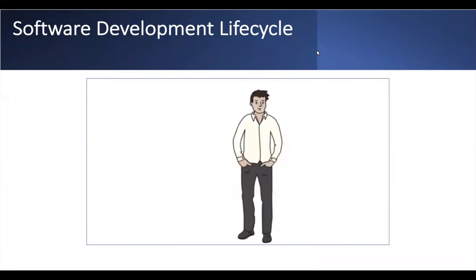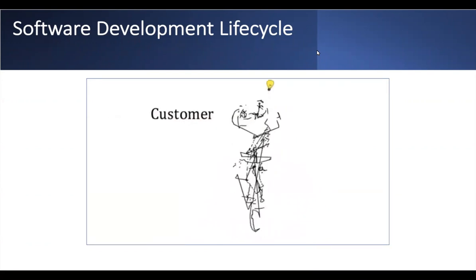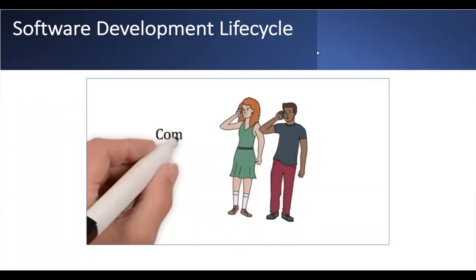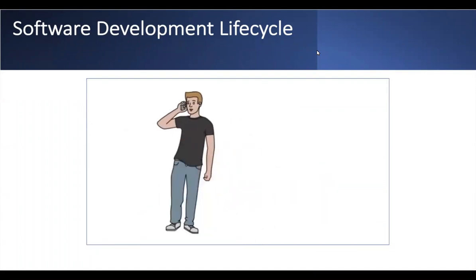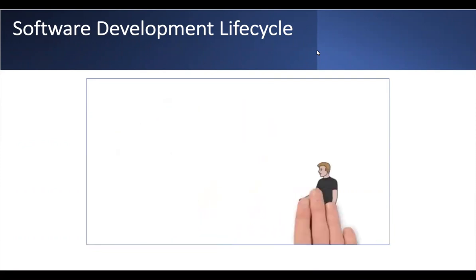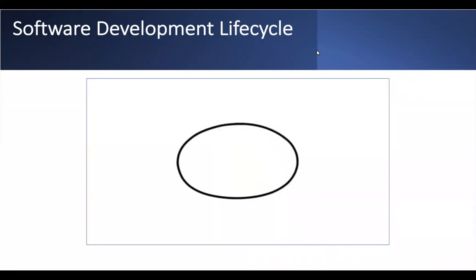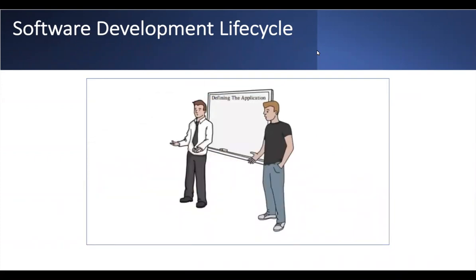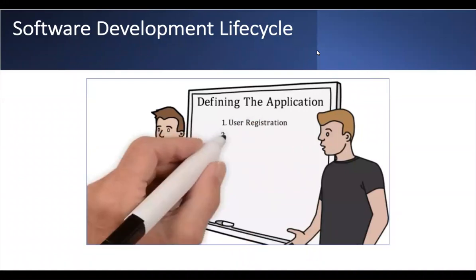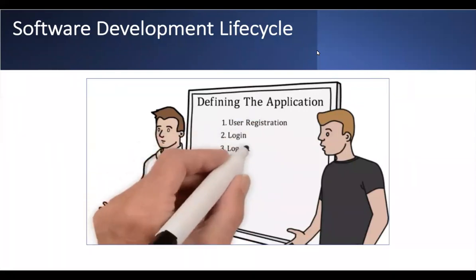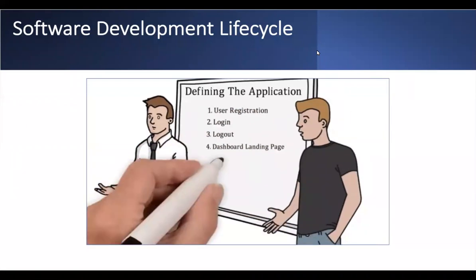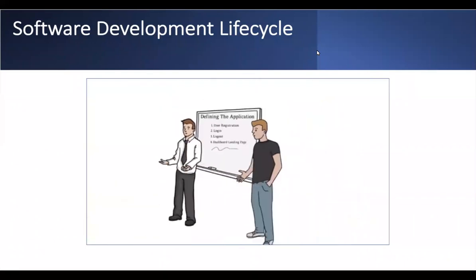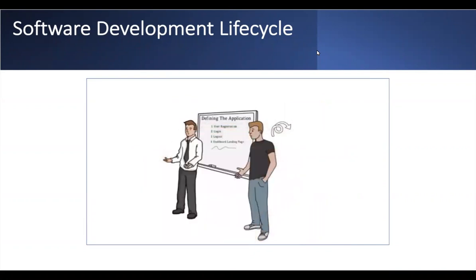It all starts with the customer — the person who has the business idea, in this case an invoice application, and the money to get it started. He reaches out to multiple tech companies until he finds one he likes, eventually meeting our company's product owner or project manager. They discuss terms, sign a deal, and accept the project. Together, the customer and product owner outline the requirements: user registration, login, logout, the dashboard landing page, and so on.